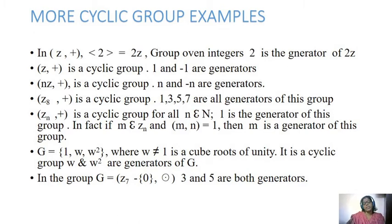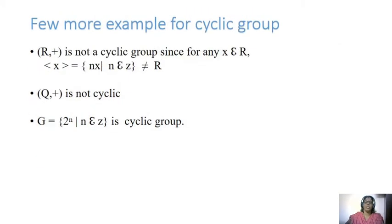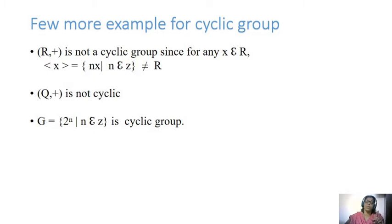Here I am giving you the generators of these groups — please try to verify whether they are groups or not. Now, a few more examples of cyclic groups: R⁺ under addition is not a cyclic group, since for any X belonging to R, X equals NX for N belonging to Z is not satisfied. Therefore, it is not a cyclic group.